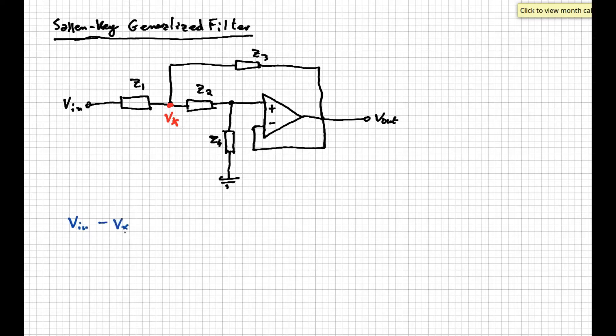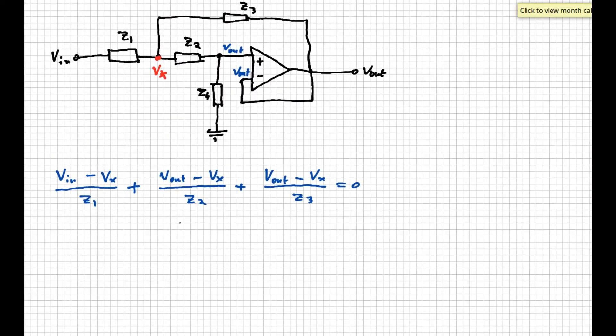We can then express the currents across Z1, Z2 and Z3 in terms of these voltages and the impedances themselves, and write down the KCL for the node on the left. Then, we can write a second equation for the node on the right, where Z2 and Z4 connect together. Remember that there is no current entering or leaving the op-amp inverting input, and so we can write another KCL for this second node, like this.